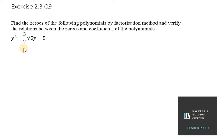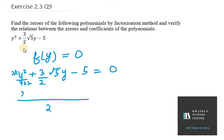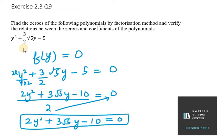Question number 9: we need to find the zeros and verify the relation. The polynomial is y² + (3/2)√5·y - 5 = 0. We equate it to zero, then take LCM on the left hand side — multiplying through by 2 — to get 2y² + 3√5·y - 10 = 0. This will be equation number 1.